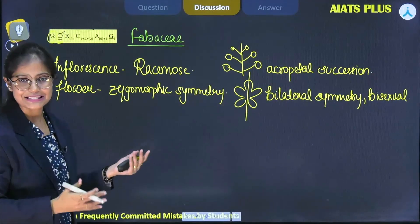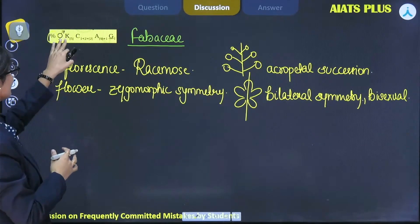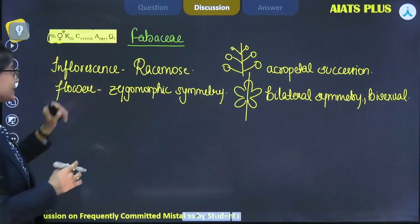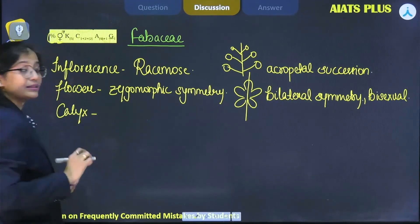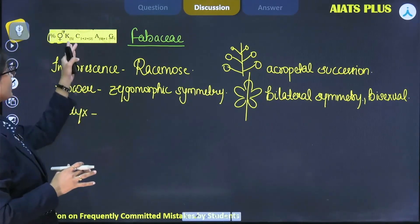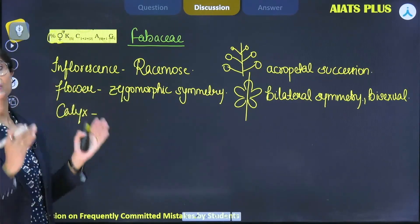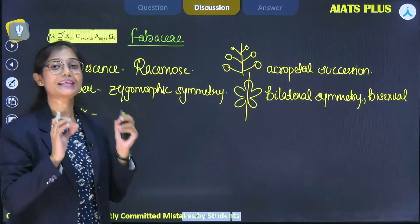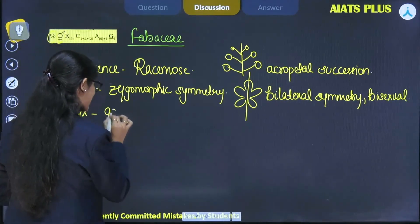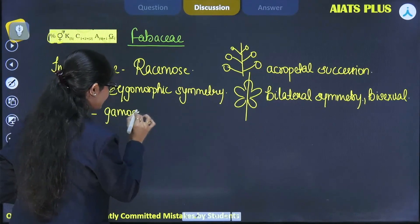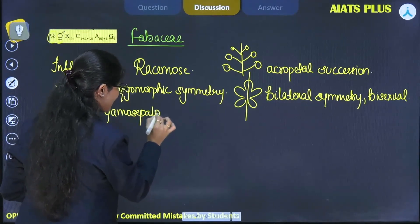Next floral feature is K, which represents calyx. The unit of calyx is sepal. Here we can see the calyxes are five in number and enclosed in a bracket, meaning the sepals are fused - the condition is gamosepalous. Their aestivation could be valvate or imbricate type.